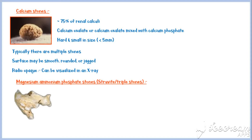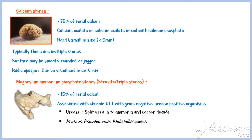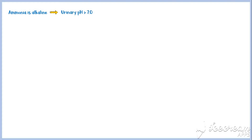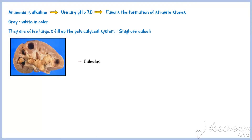Magnesium ammonium phosphate stones account for about 15% of renal calculi. They are predominantly associated with chronic urinary tract infections with gram-negative, urease-positive organisms. Urease is an enzyme that splits urea into ammonia and carbon dioxide. Major organisms in this group include Proteus, Pseudomonas, and Klebsiella species. E. coli is not capable of splitting urea and therefore is not associated with struvite stones. Ammonia is alkaline, so the pH of urine rises above 7, which favors formation of struvite stones. These stones are gray-white in color, often large, and fill up the pelvicalyceal system, resembling a staghorn — hence they are often referred to as staghorn calculi. In this picture, you can see a large staghorn calculus filling up the entire renal pelvis. Like calcium stones, they are also radio-opaque and visible on an X-ray.